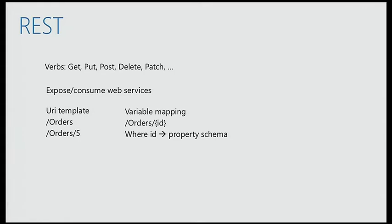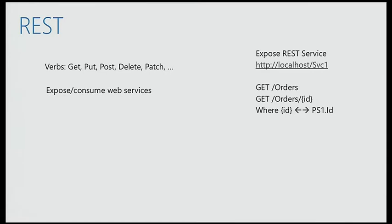The placeholder in the URI specifies a value that comes at runtime, provided by property schema values. You can specify endpoints and when a client sends a message with a particular ID, it populates the property schema. It works both ways: when sending out, you take values from runtime; when exposing a web service, the client's message populates the property schema. This REST adapter allows creating and exposing services without dependency on SOAP or WCF, enabling true interoperability.